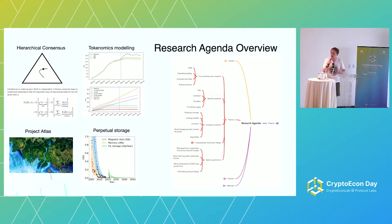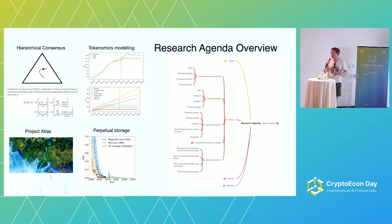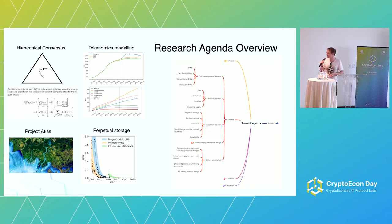Having storage and things like the Filecoin Virtual Machine to enable user programmability will allow us to affect the world in a quite substantial way. But the first step is being able to organize, understand, curate, and make data available. That's what we're doing with projects like Project Atlas, which Ishan is going to talk about later.